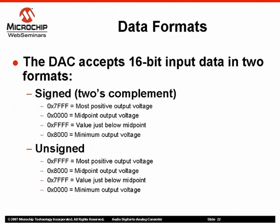The DAC accepts data in two formats: signed and unsigned integers. An unsigned 16-bit value can range from 0x0000 to 0xFFFF, with 0 being the absolute minimum and all Fs being the most positive value. A signed 16-bit value will range from 0x8000 to 0x7FFF, where 0x7FFF is the most positive value, 0x0000 represents the midpoint value, and 0xFFFF is a value just below the midpoint. The FORM bit in the DAC control register is where the user can select between signed and unsigned data input.